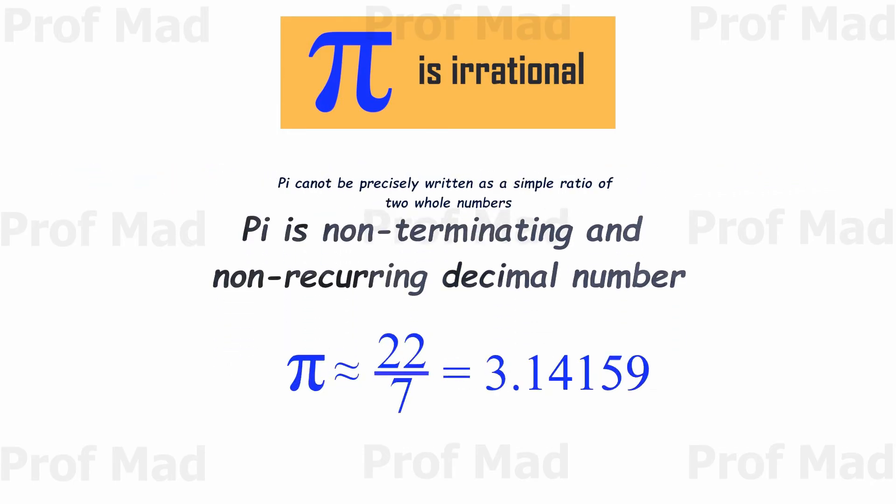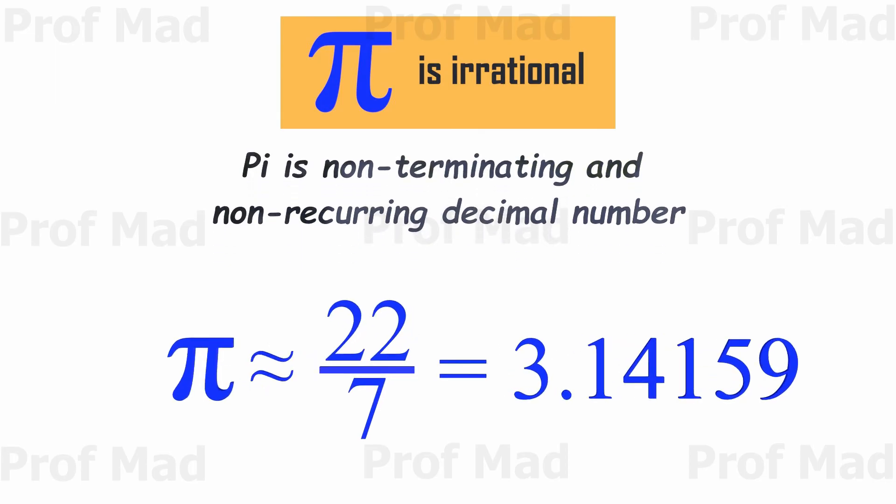The most popular one is 22 divided by 7. It gives the value of pi equal to 3.14159. It's not exactly the value of pi, but that approximation is enough for us to use in most of our calculations.